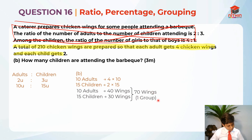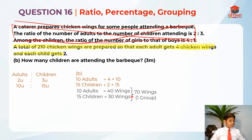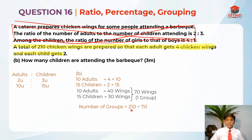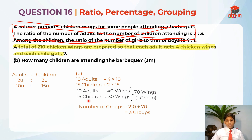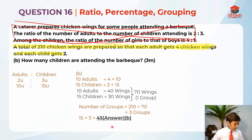One group does not make 210 — it's supposed to be a total of 210. So the adults are not 10 and the children are not 15. Since this is one group, I'm going to use the grouping concept and find how many groups there are in order to find the children. The number of groups is 210 divided by 70, which is 3 groups. In each group there are 15 children, so the total children is 15 times 3, which is 45. So 45 is the answer for part B.